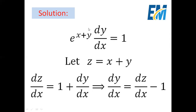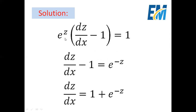And then dy over dx will be dz over dx minus 1. So, we can substitute x plus y with z, and dy over dx with this result. We will have e to the power z multiplied by dz over dx minus 1 equals 1. Then we can divide the whole equation by e to the power z to get dz over dx minus 1 equals e to the power minus z. Then dz over dx becomes e to the power minus z plus 1.